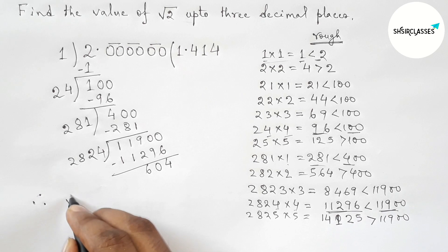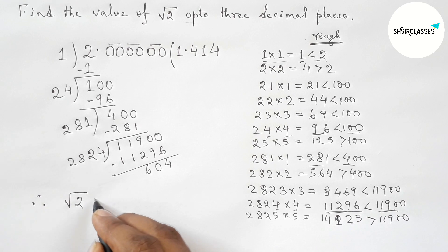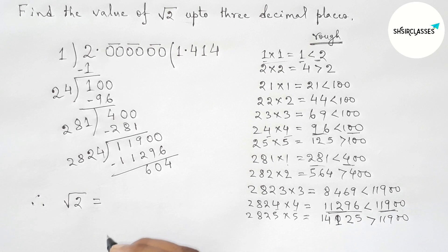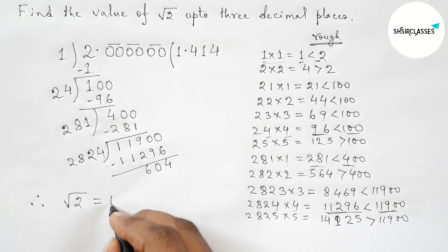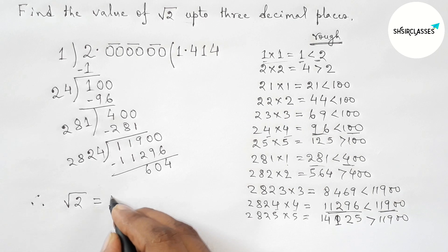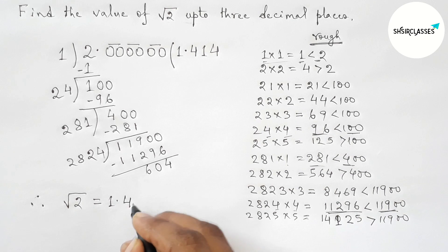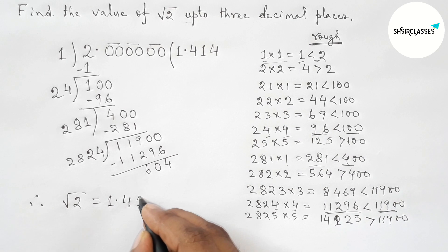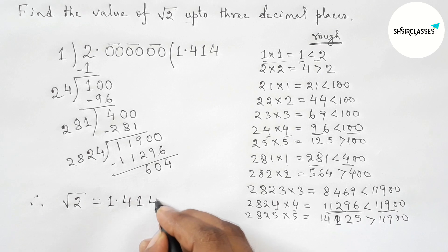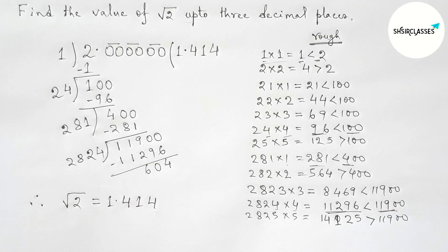Therefore the value of root 2 equals 1.414. By this method you can find the value of root 2 up to three decimal places. That's all.